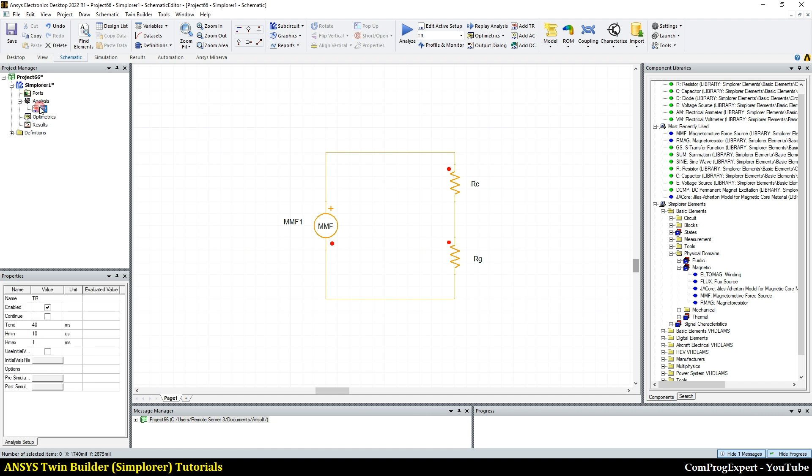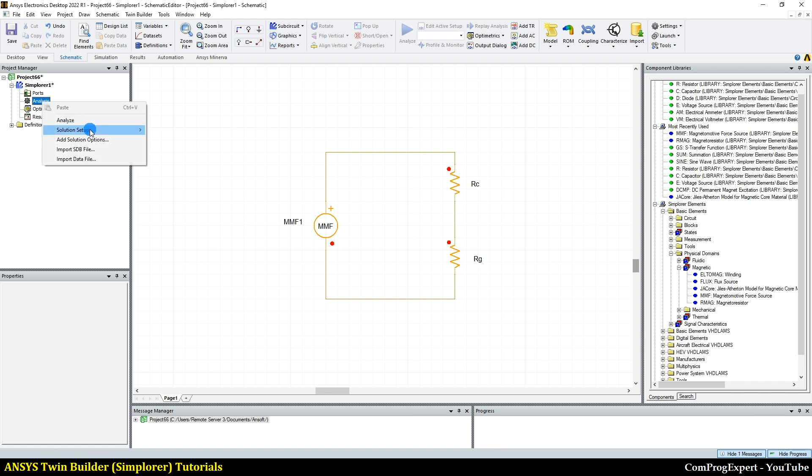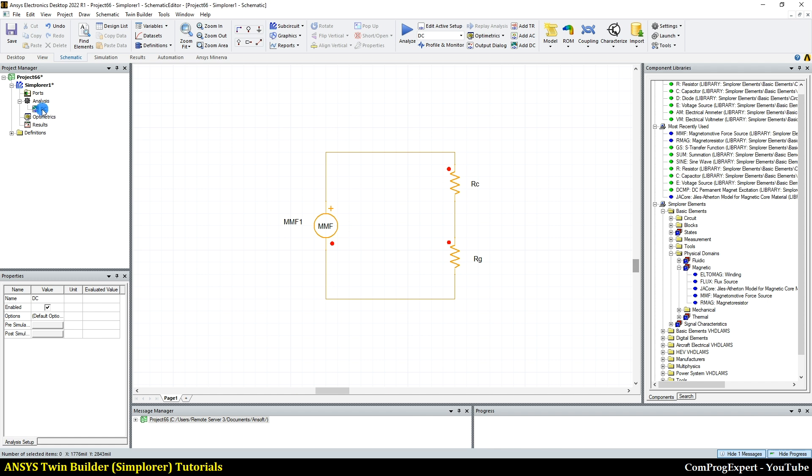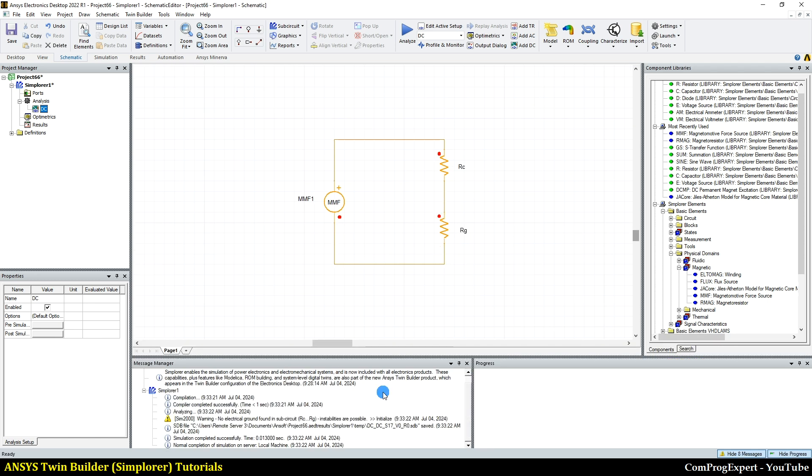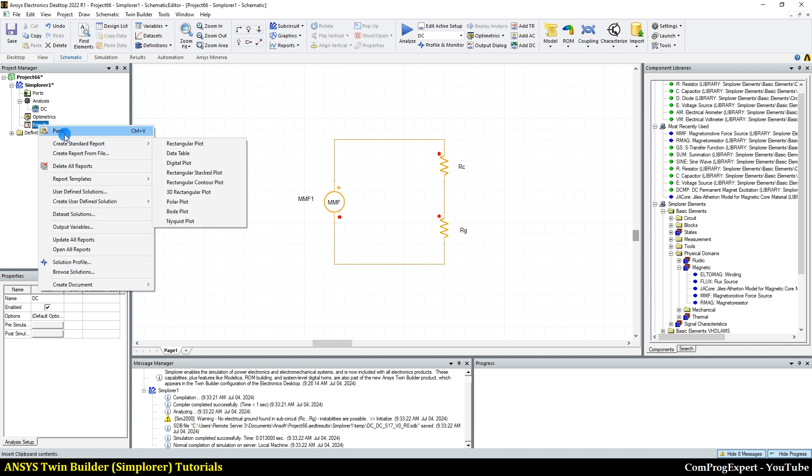Here, I don't need to run a transient simulation. I want to do a magnetostatic analysis. So add a DC solver and simply run the simulation, analyze, to find the value of the flux in RC and R gap. The simulation completed, results.